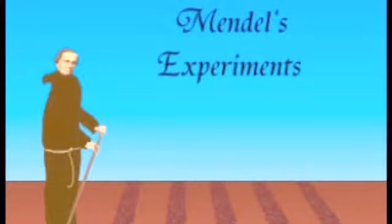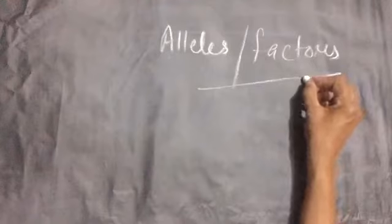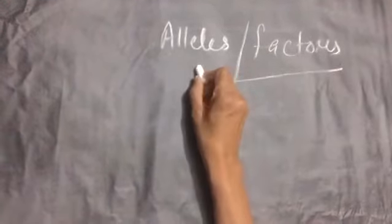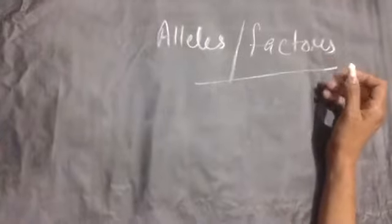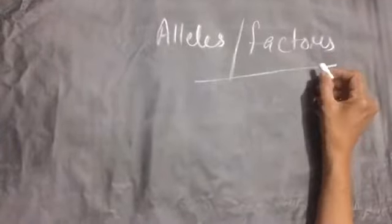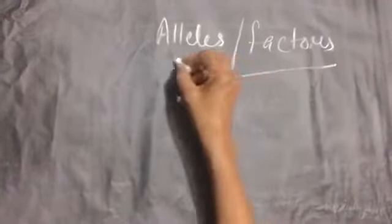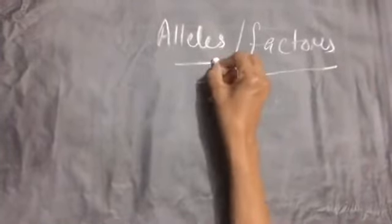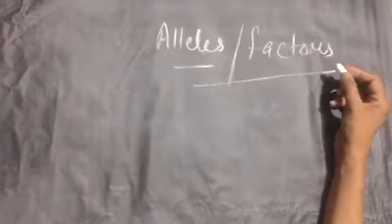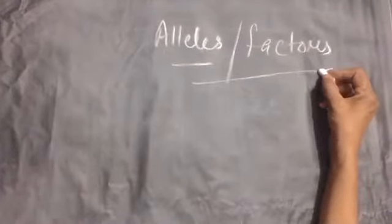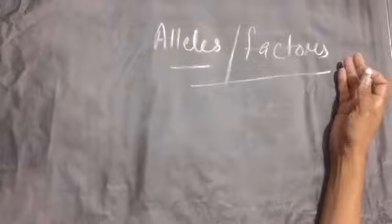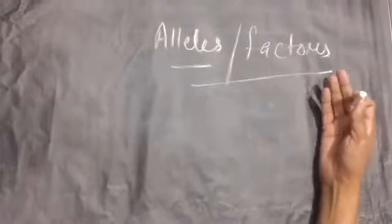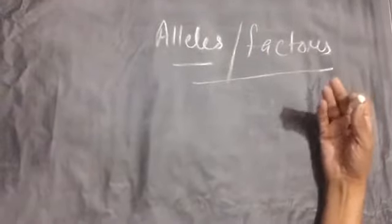Let me explain some terms. Alleles — in the language of Mendel, these are called factors. Today we use the term alleles, but Mendel used factors or determinants. What is an allele or a factor, according to Mendel?